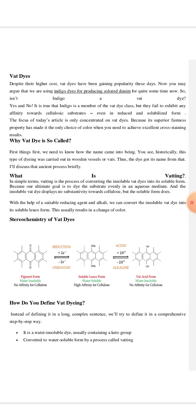Its answer can be yes and no, both at the same time. It is true that indigo is a member of the vat dye class, but they fail to exhibit any affinity towards cellulosic structures, even in reduced and solubilized form. These two words are of very great importance because all the dyes—vat dyes, sulfur dyes, or indigo dyes—are applied to the fabrics in reduced and solubilized forms.